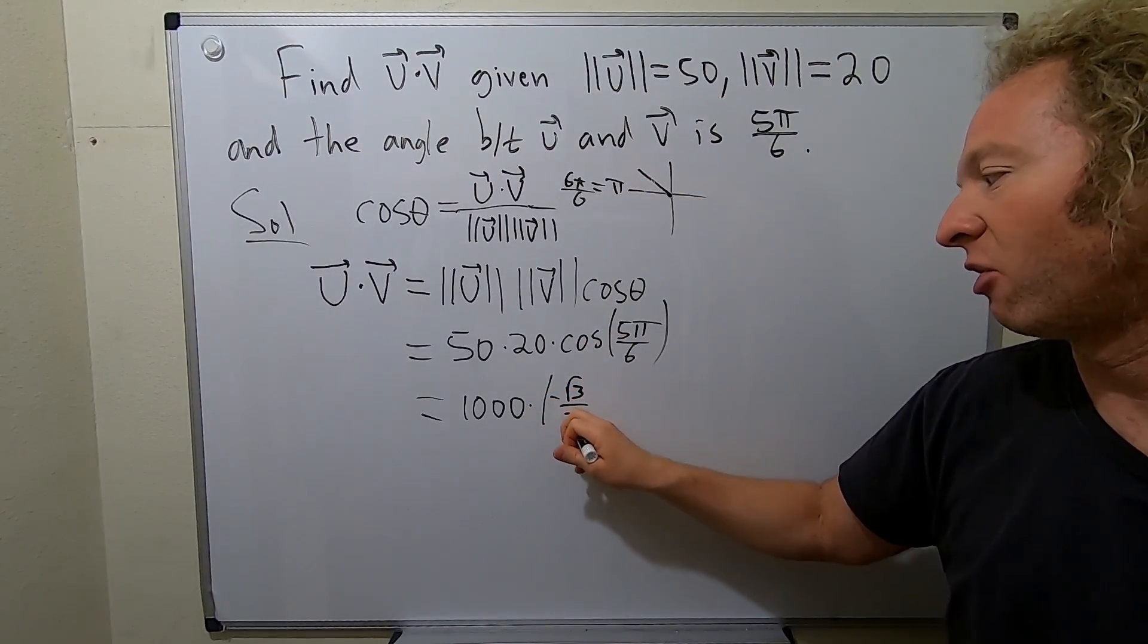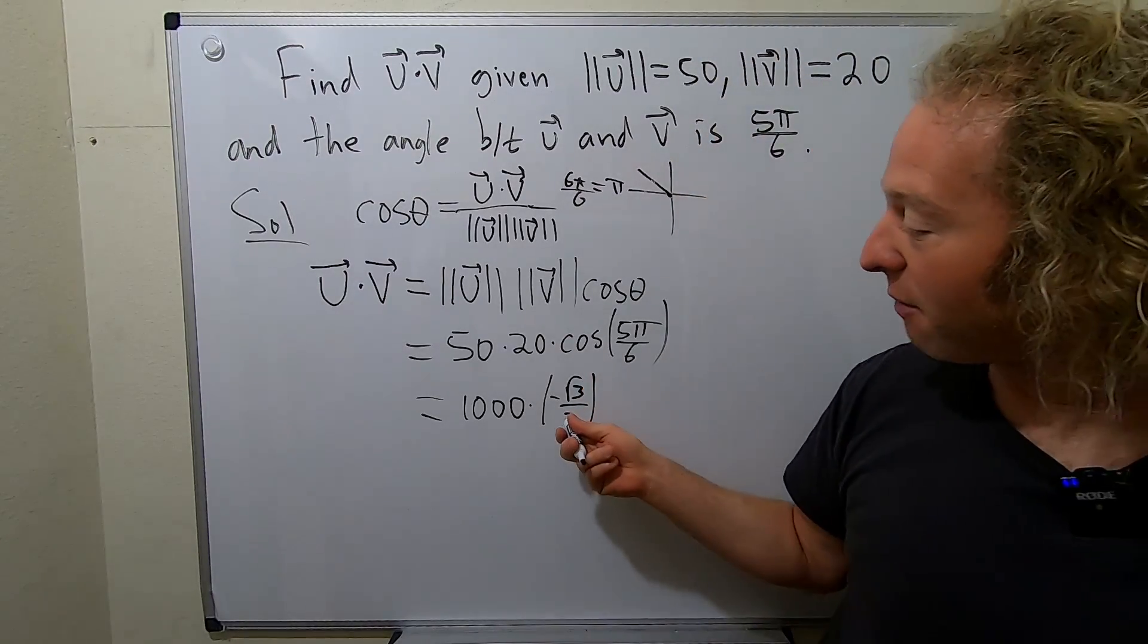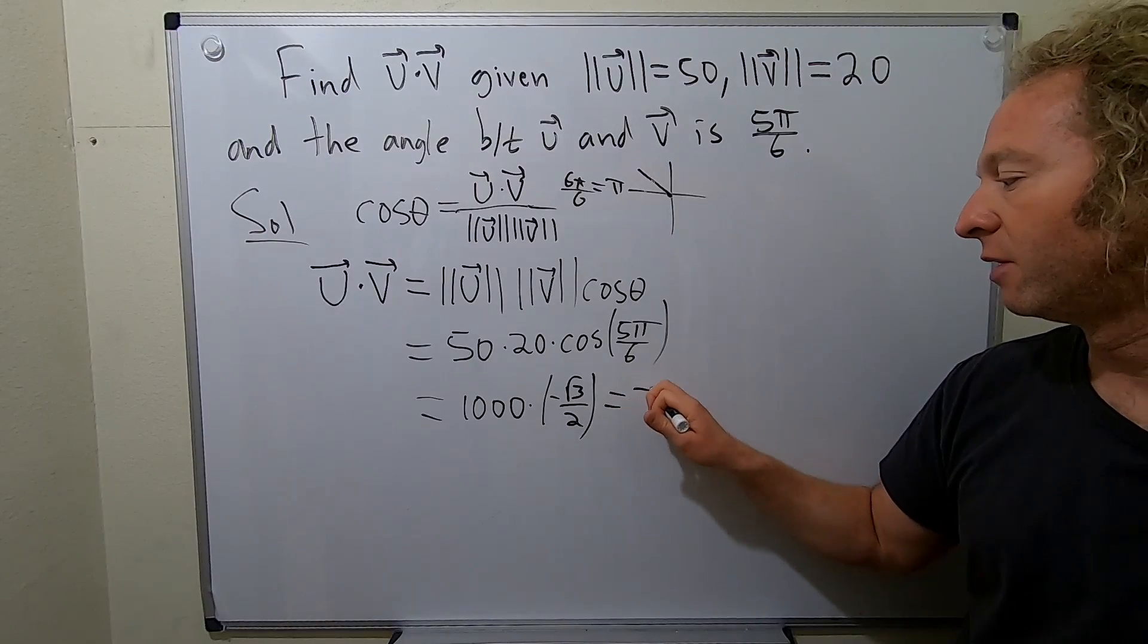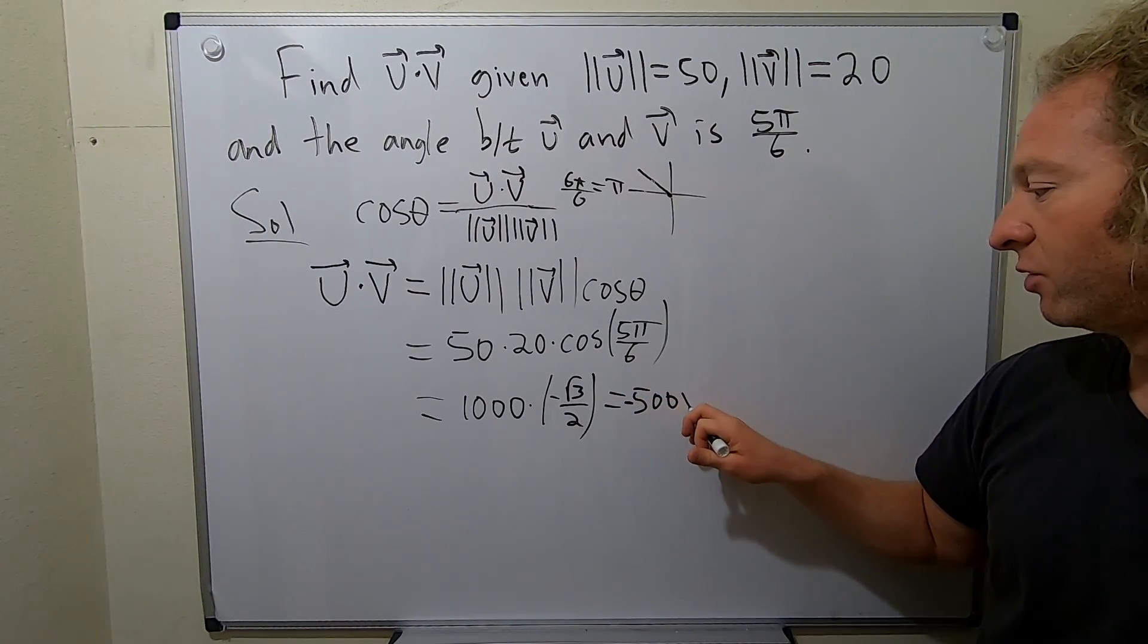Wow, that's a mouthful. So that's like all of trig in 10 seconds, or at least the most important stuff. 2 goes into 1,000 500 times. So 500, and I forgot my negative sign there, so negative 500 square root of 3.